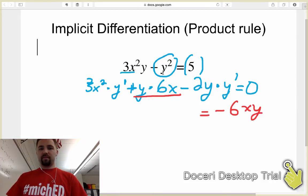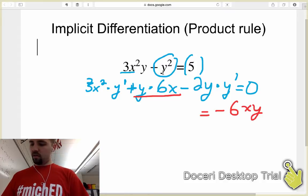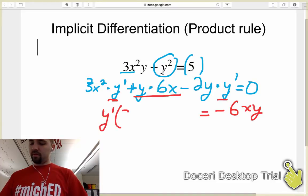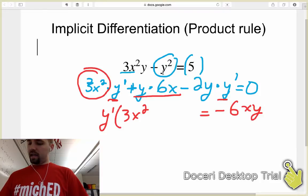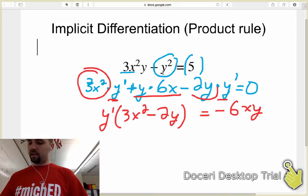And then the next thing that we're going to do is factor out a y' from each one of these terms. So we end up with this y' times (3x² - 2y).